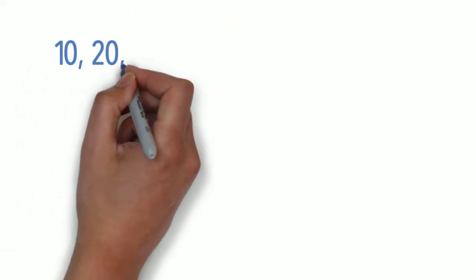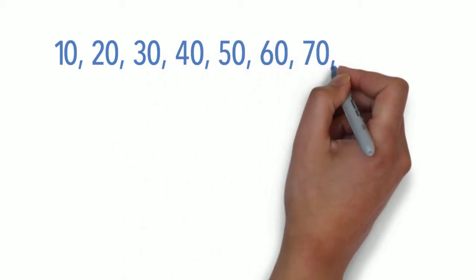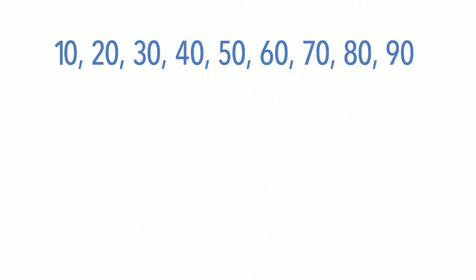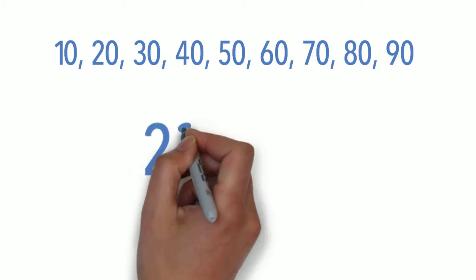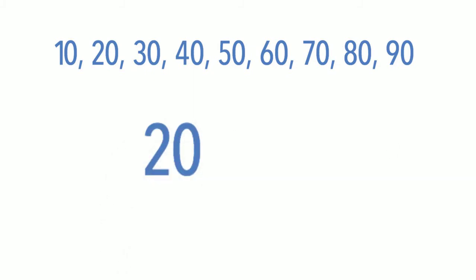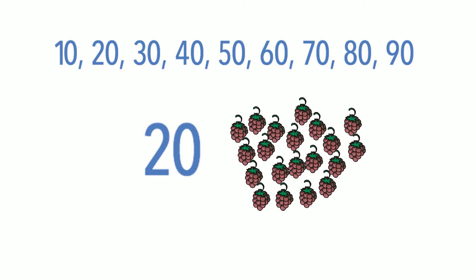Tens have a higher value, so you need a lot of ones to show them. They're also two-digit numbers. To write the number twenty, you need a two and a zero. And to show twenty in the real world, you need twenty ones.